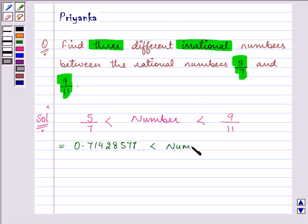So the number, and also 9 by 11 can be converted into decimals and can be written as 0.818181818182 and so on.